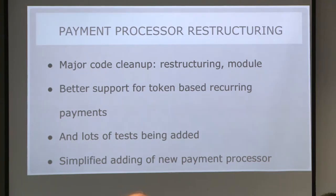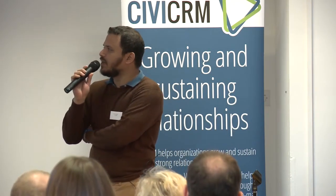We did a complete restructuring of the payment processor code — specifically, a surgical overhaul of the entire payment processor. We added better support for recurring tokens, like the Stripe payment processor, and modularized the entire way payment processors work. Going ahead, if you want to integrate a new payment processor, it is a pretty straightforward and documented process. We also added lots of tests to ensure we are not breaking any payments, since payments are an important part for each organization.